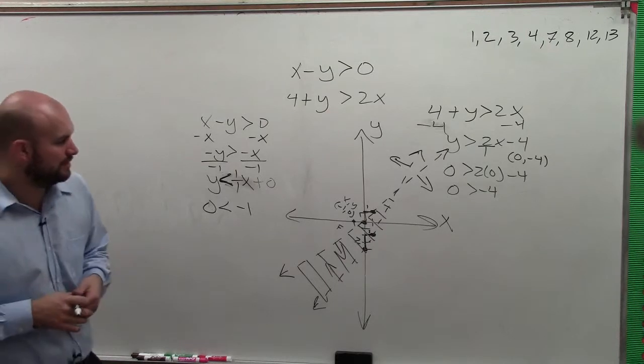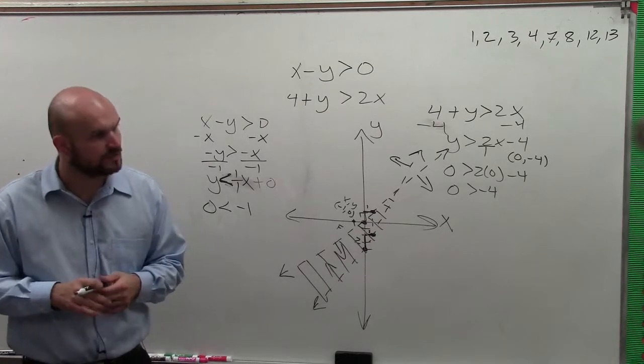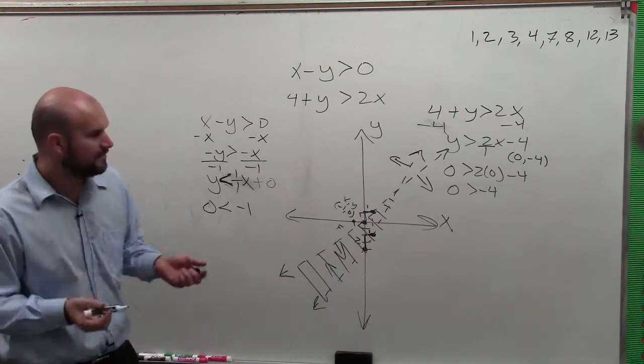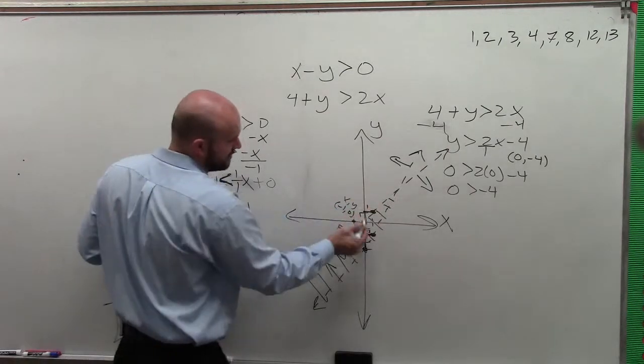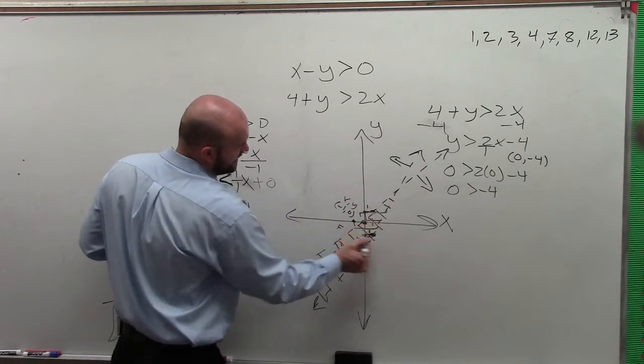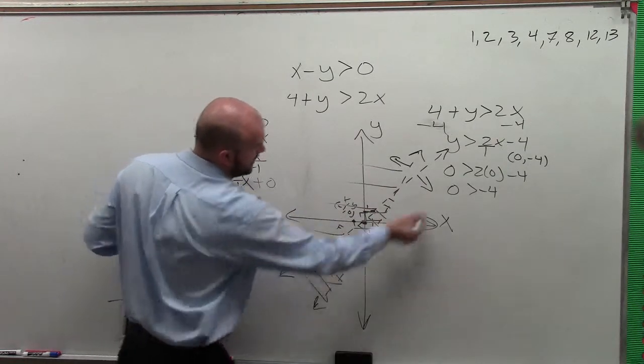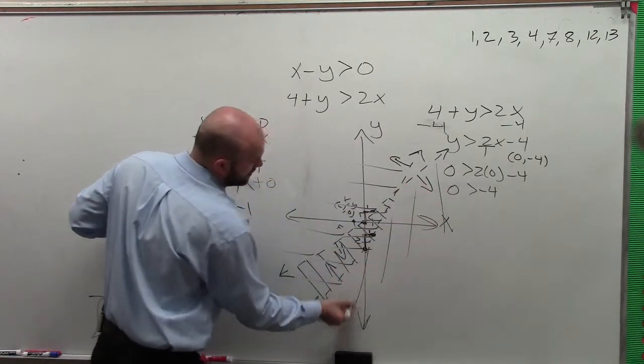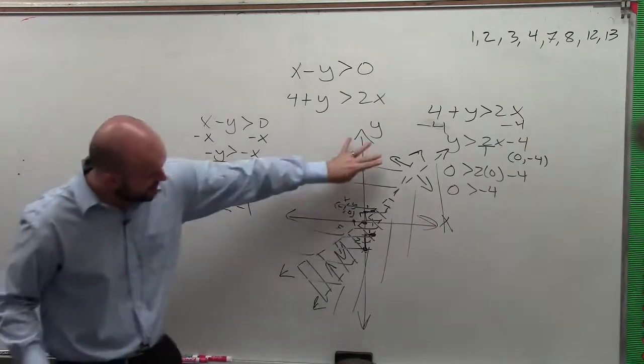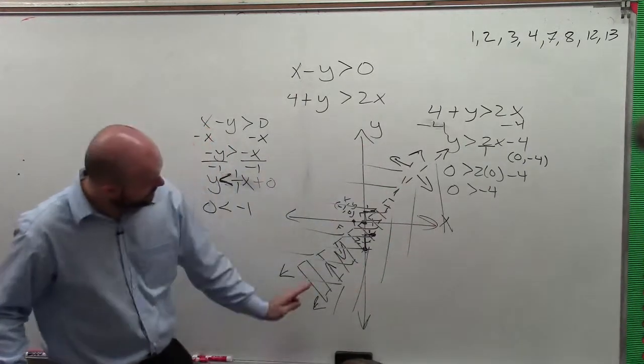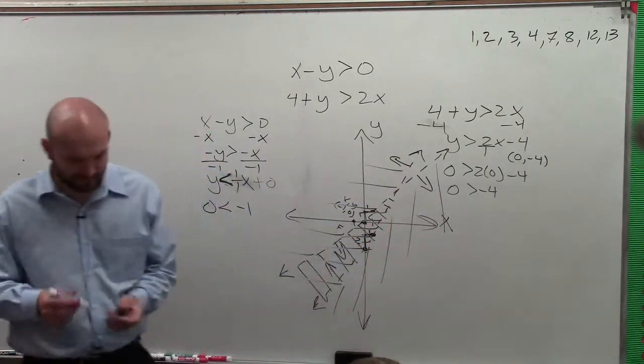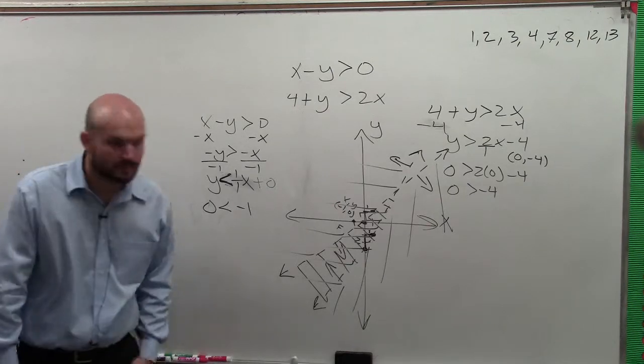All right, that's what basically we're going to be looking at for solving the system. And I mean, if you shade both of them, that's fine. You can see, like, these would be the intersected. You know, if you shaded both, it would look something like that. Here's the shading for one. Here's the shading for the other. Here's where they intersect.